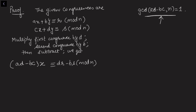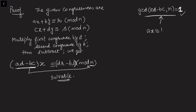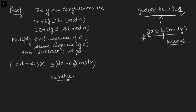The coefficient of x is (ad - bc) and the modulus is n. Their gcd is 1, and 1 always divides any integer on the right-hand side, so this congruence is solvable. Because the gcd is 1, the solution is also unique. This was established in my previous video: when gcd = 1 and it divides b, there is a unique solution. So gcd(ad - bc, n) = 1 confirms solvability and uniqueness.